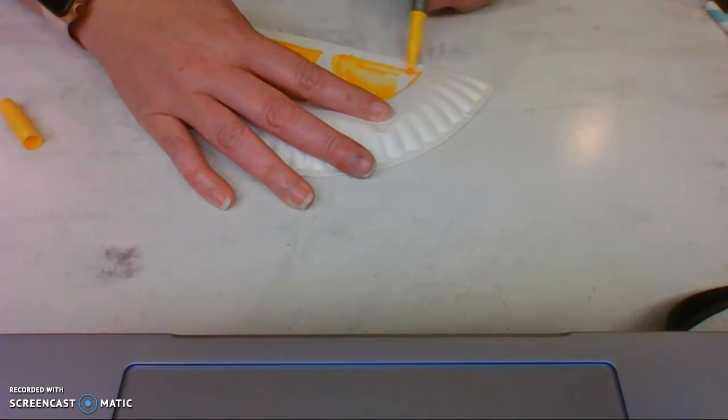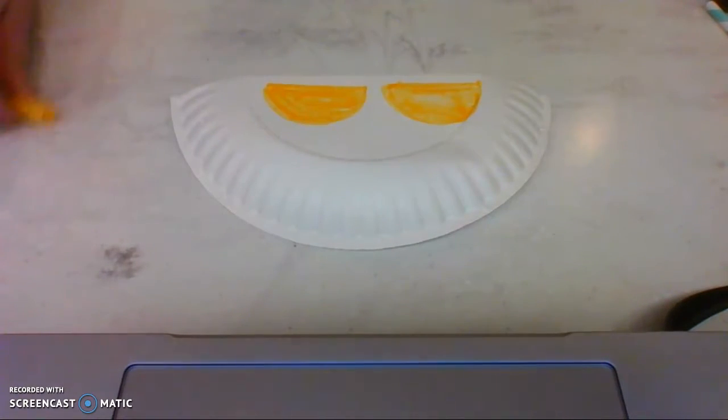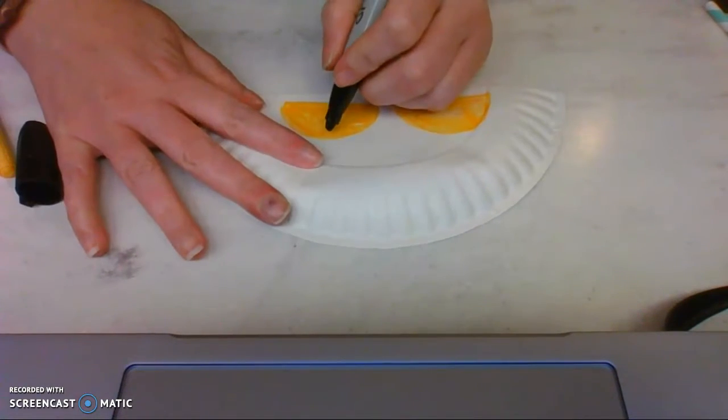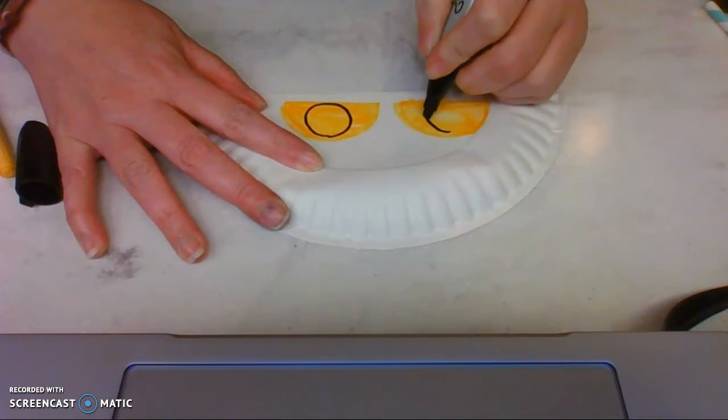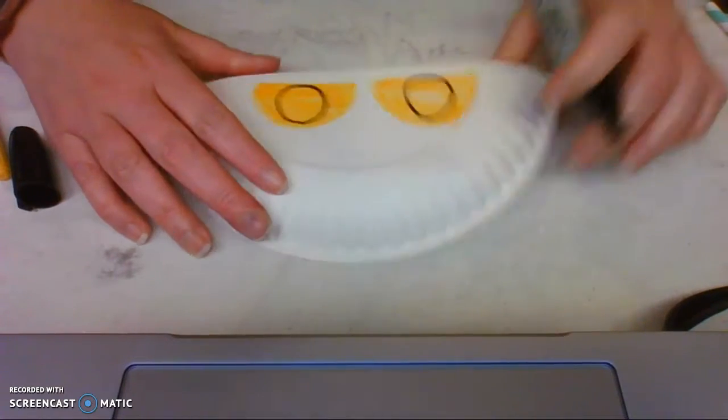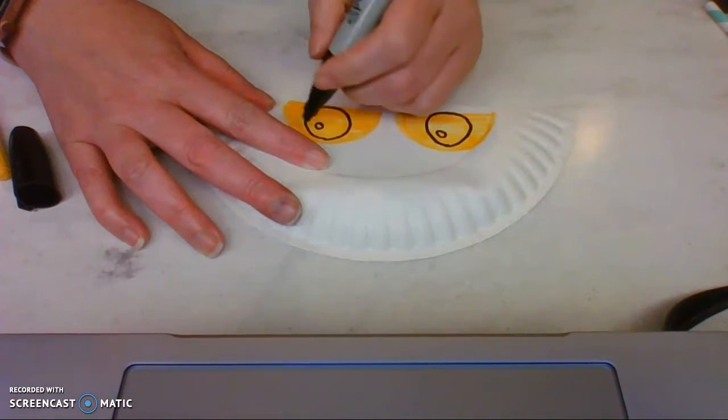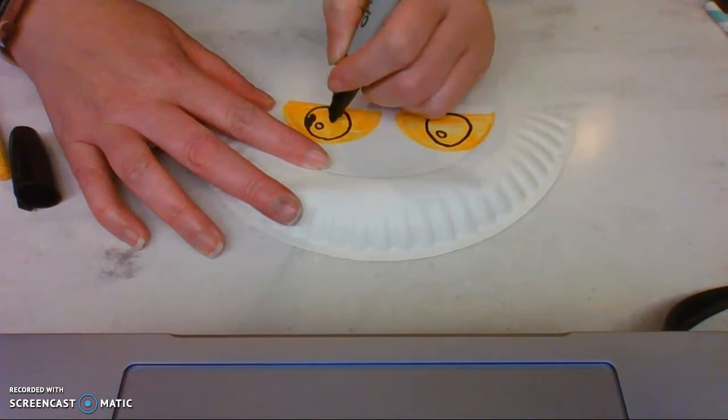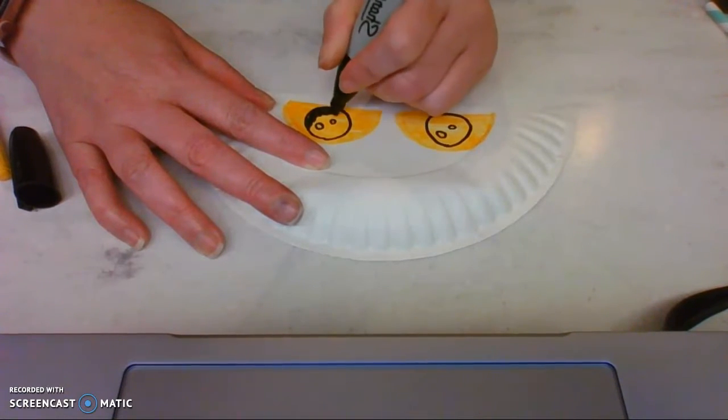Once I'm done, I'm going to get a black marker, and I'm going to draw two big circles in the middle of my yellow half circles. So right here, looky there, there's my black circles, and I'm going to color these in. I'm going to leave little circles in the middle there for the reflection, and I'm going to color this all in black.